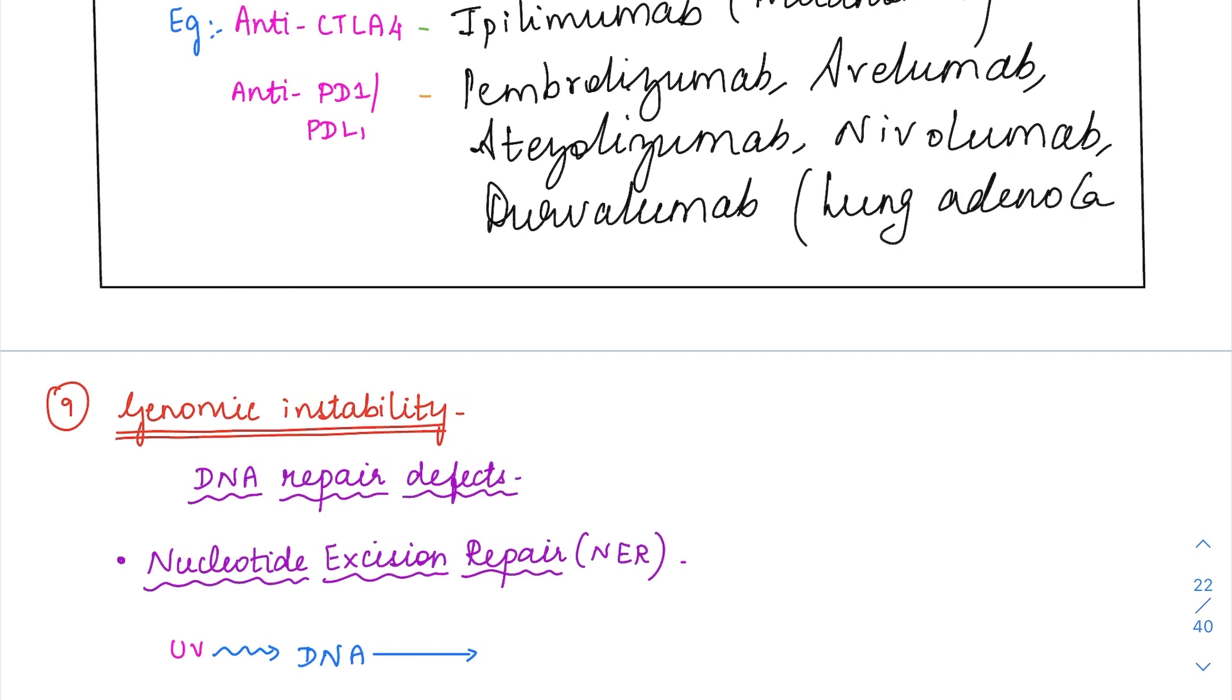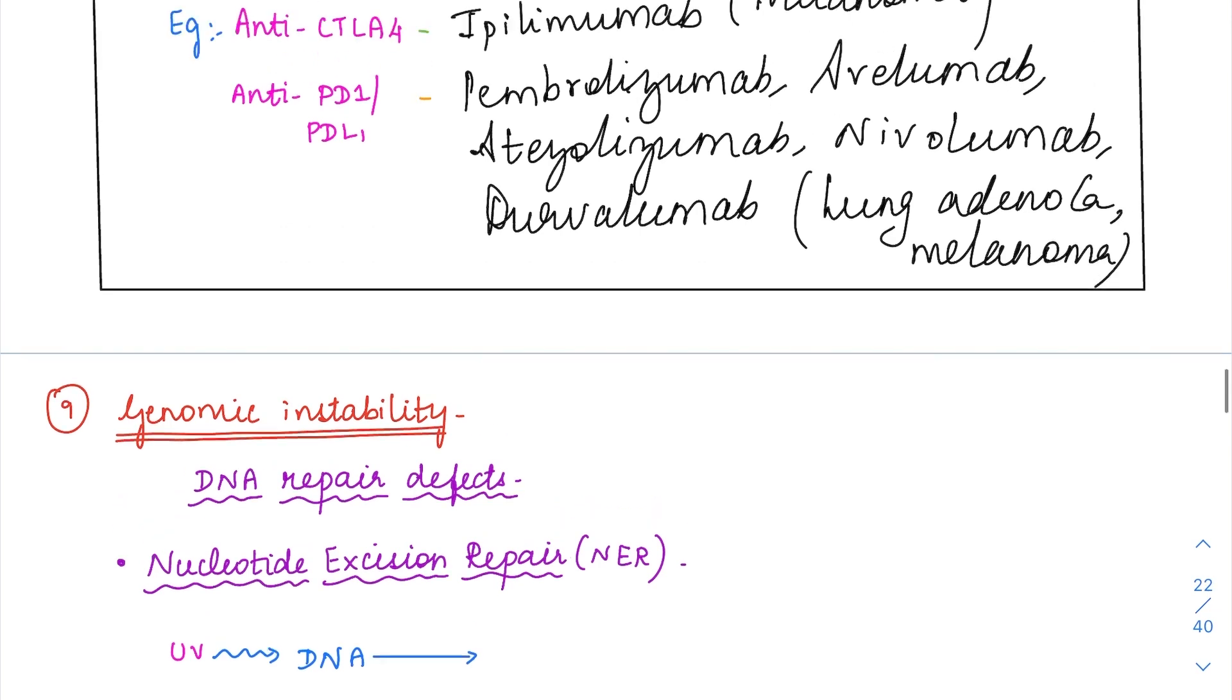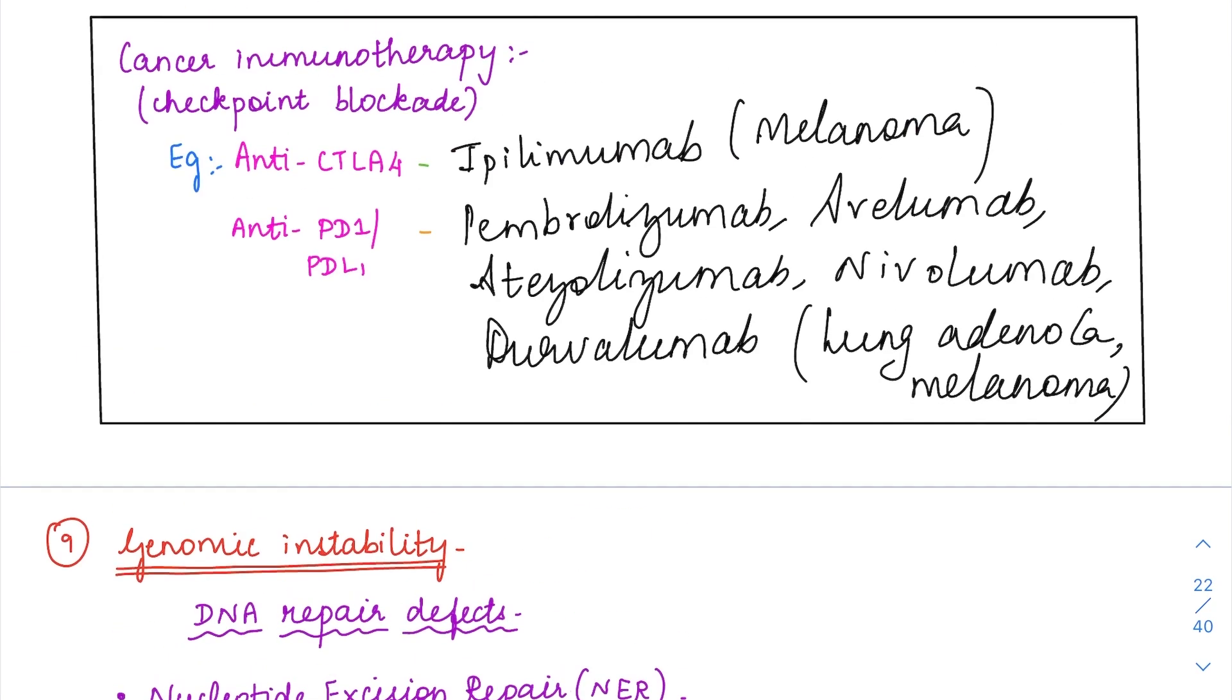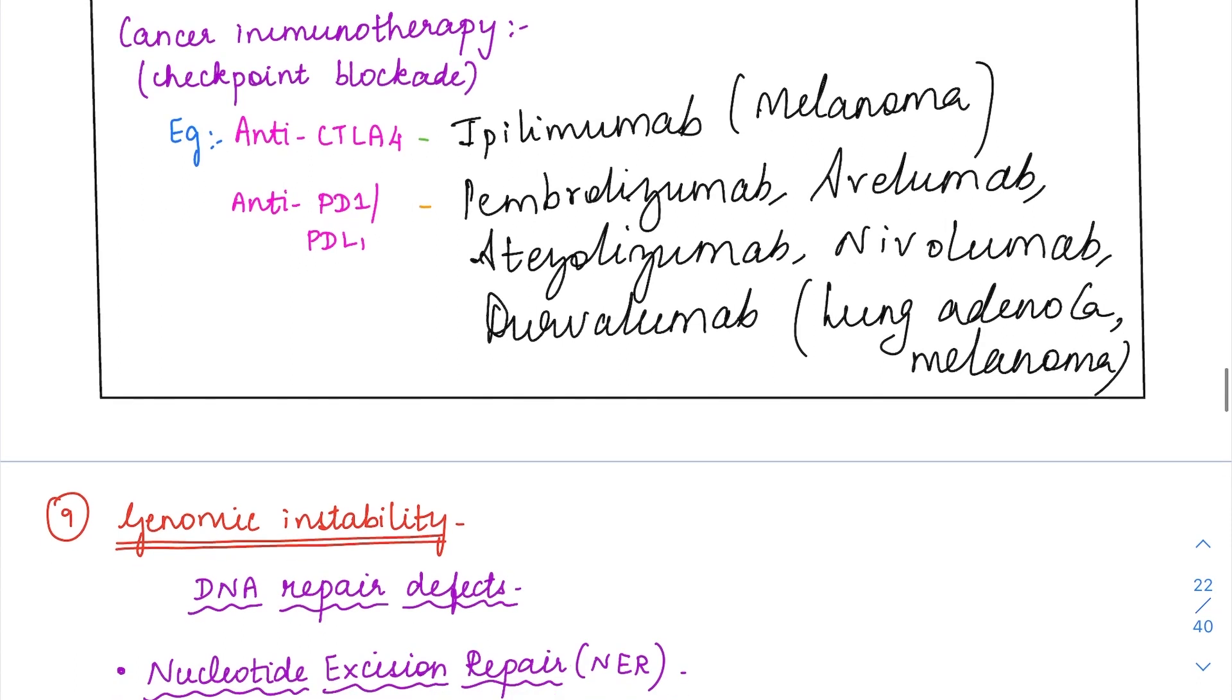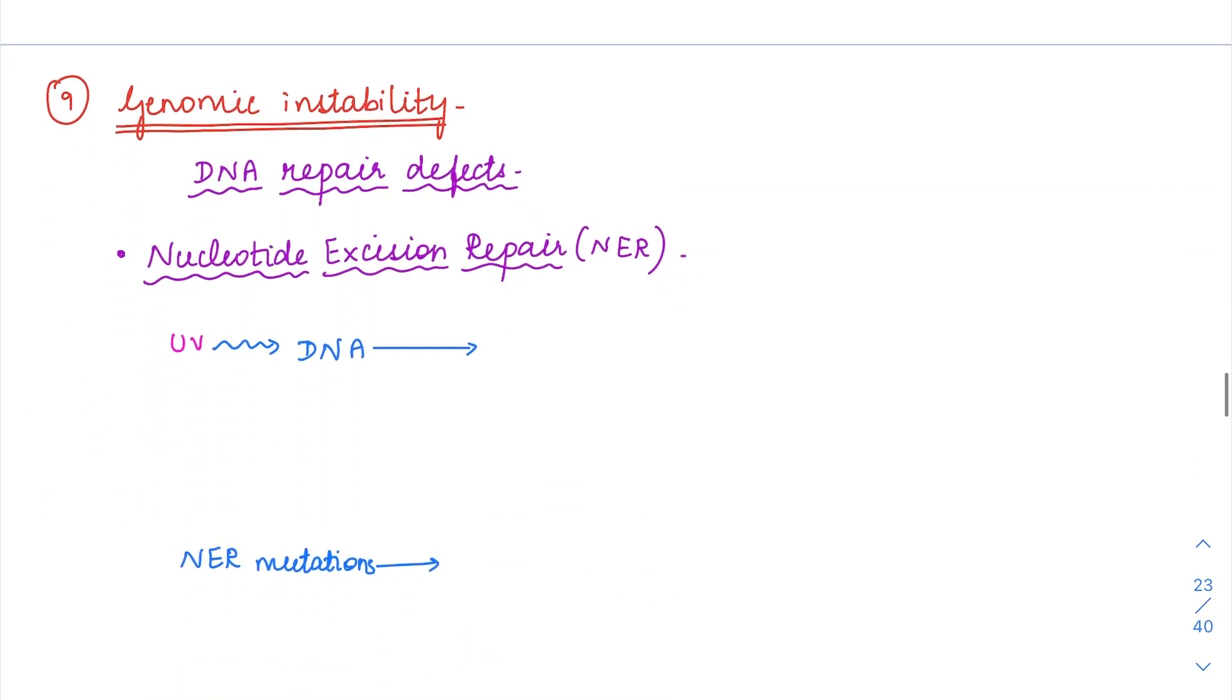All of these drugs have been approved by FDA for usage in lung adenocarcinoma. As such nowadays, we are supposed to test for this PD-1, PD-L1 expression by the lung adenocarcinoma. Apart from that, they are also used in melanomas and certain other cancers as well. This is also called as cancer immunotherapy or checkpoint blockade. This hallmark is also done.